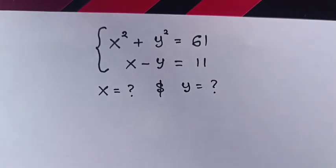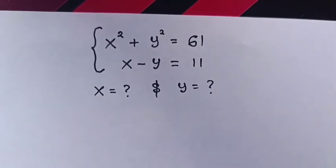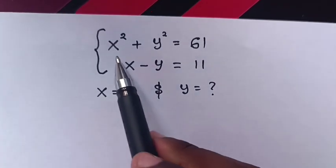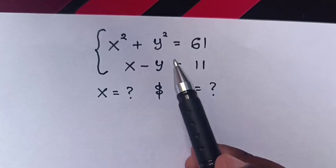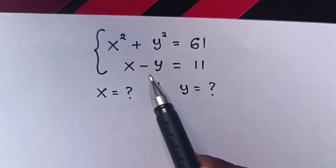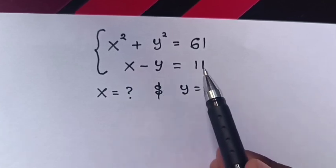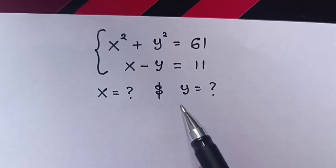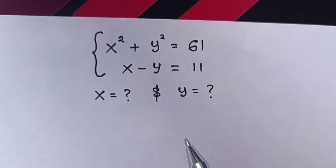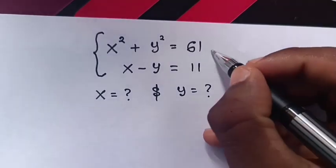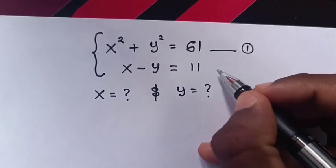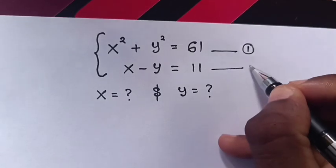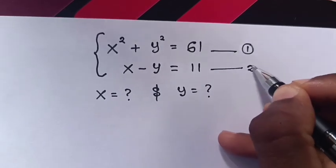Hello. How to solve this system of equations: x squared plus y squared is equal to 61 — let this be equation 1 — and x minus y is equal to 11 — let this be equation 2 — to find the value of x and y.